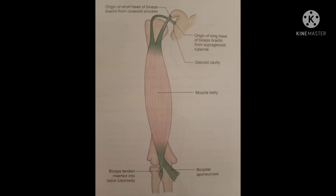Insertion of biceps brachii muscle: both the short head and long head join with each other in the lower part of the arm and form a fusiform muscle belly. The muscle belly is replaced by a small tendon which finally gets inserted into the posterior rough part of the radial tuberosity of the radius.